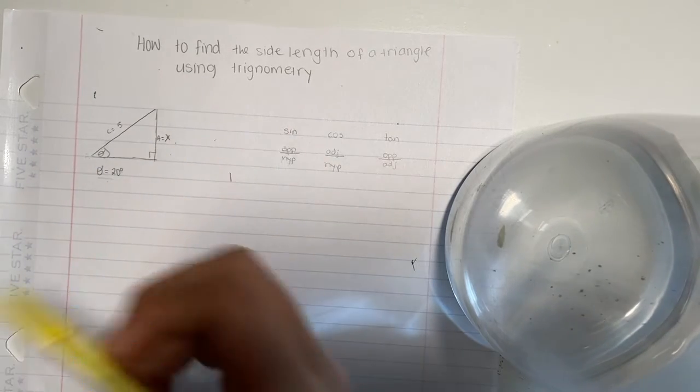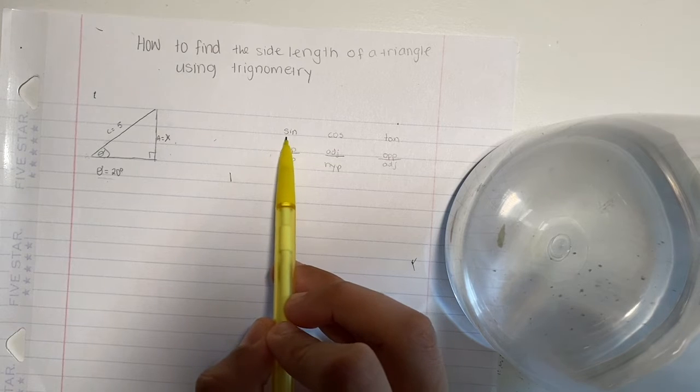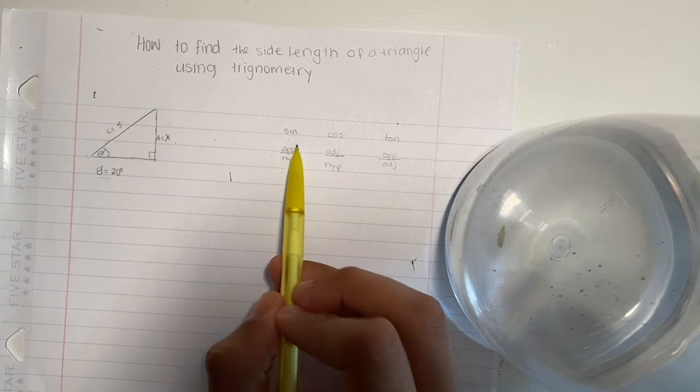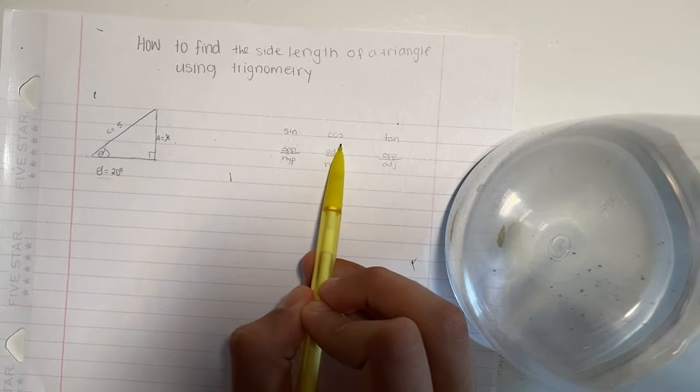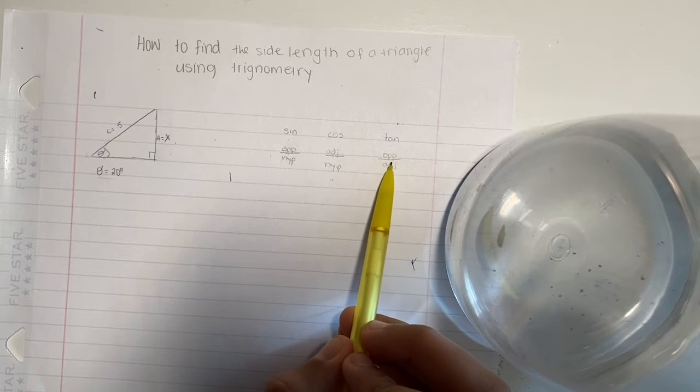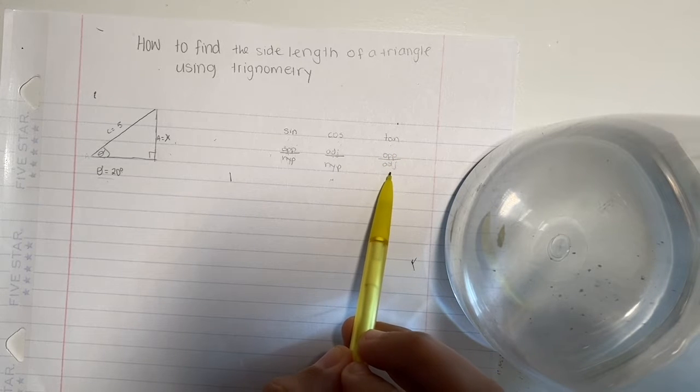In trigonometry there's three things to use: sine, cosine, and tan. Sine equals opposite over hypotenuse, cosine equals adjacent divided by hypotenuse, and tan is opposite divided by adjacent.